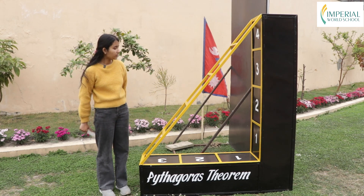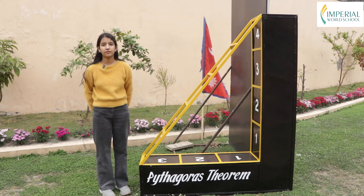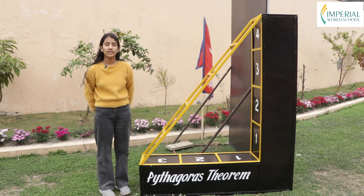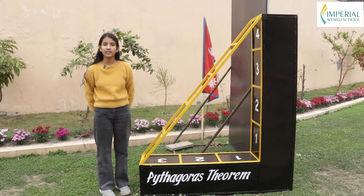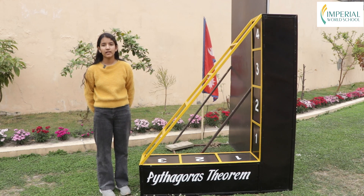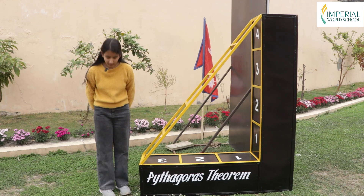So three square plus four square equals five square. In this way we can conclude that in any right angle triangle, a square equals b square plus c square. Thank you.